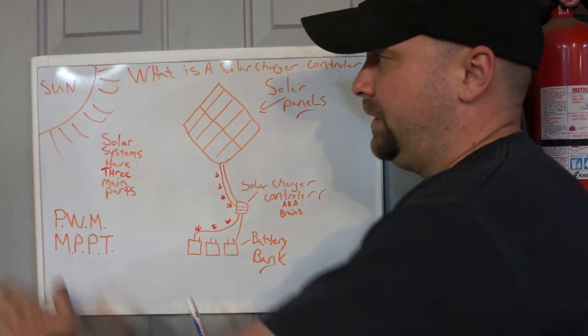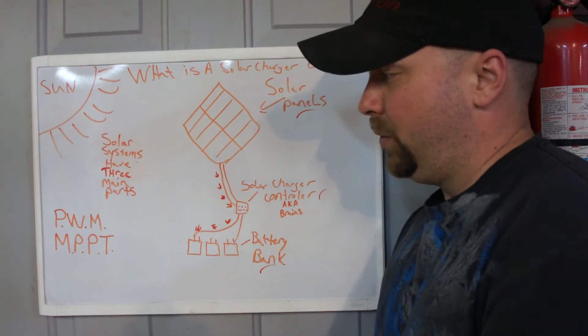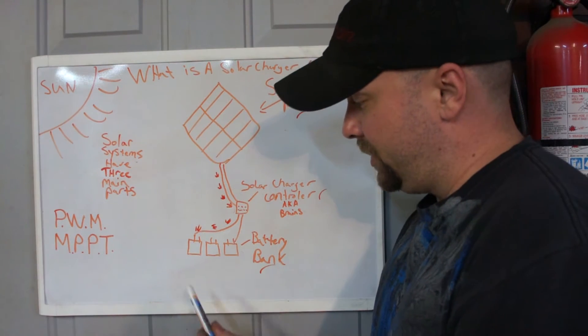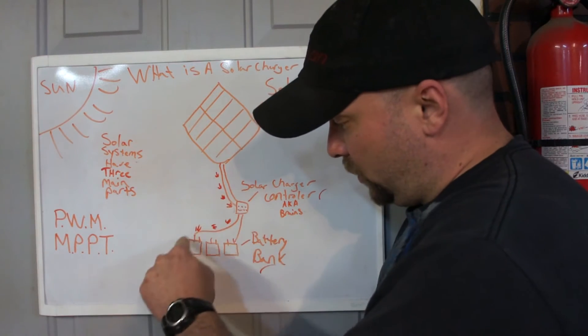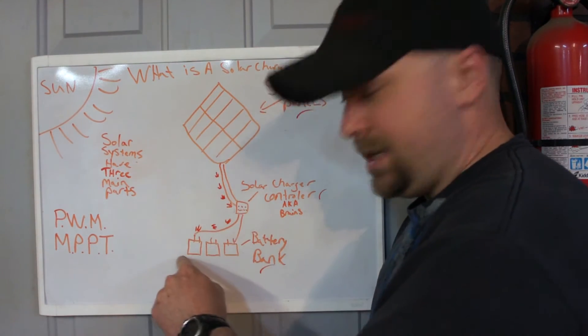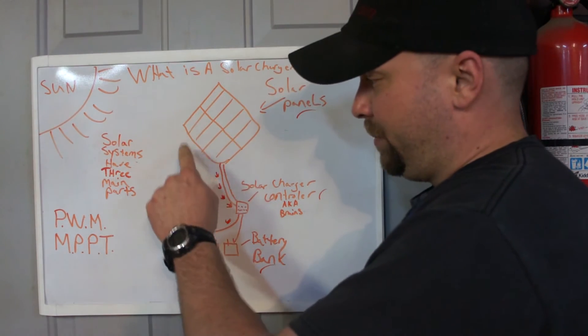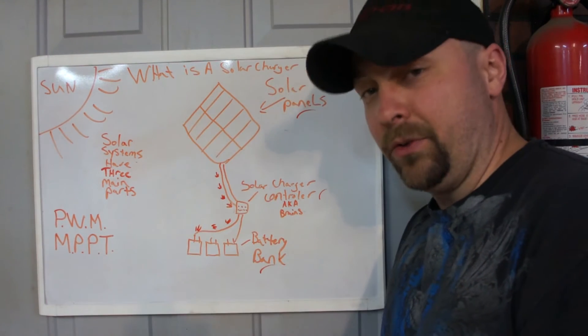And then once the sun leaves us for the day, and now we have a moon out, no light anymore for charging, you're actually going to see your flow to the batteries now reverse and go back up to the solar panels, and you're going to have your batteries discharge.